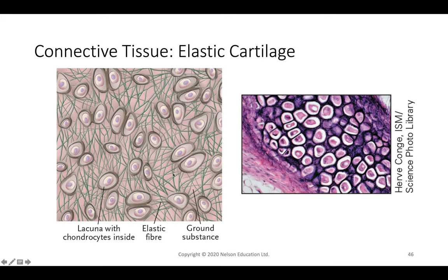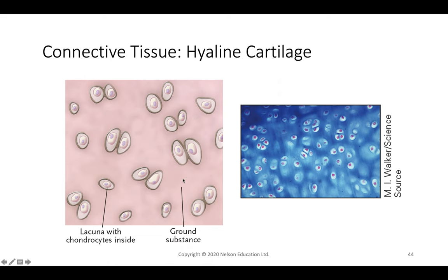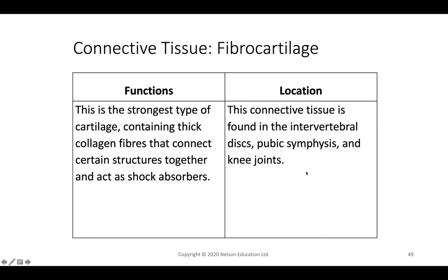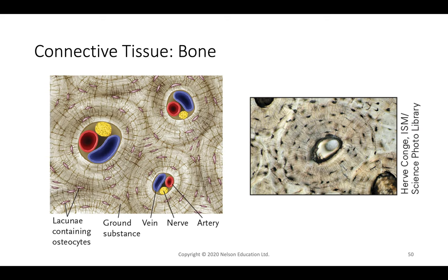Fibrocartilage is the strongest type of cartilage, containing thick collagen fibers that help connect structures and act as shock absorbers. Found in the intervertebral discs of the back, knee joints, pubic symphysis, and hips — regions that are connections between bones requiring shock absorption, such as during running.